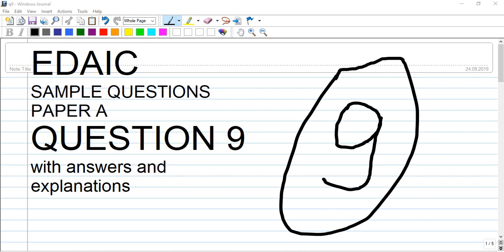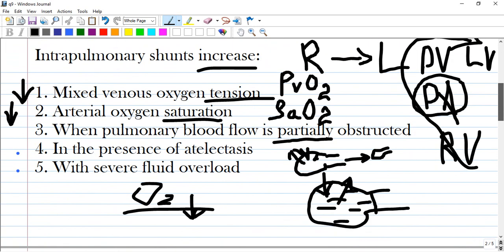Hi guys, we are talking about a dry example questions, paper A question number 9. Intrapulmonary shunt increase: mixed venous oxygen tension, arterial oxygen saturation, when pulmonary blood flow is partially obstructed, in the presence of atelectasis, with severe fluid overload. Let's analyze every option.